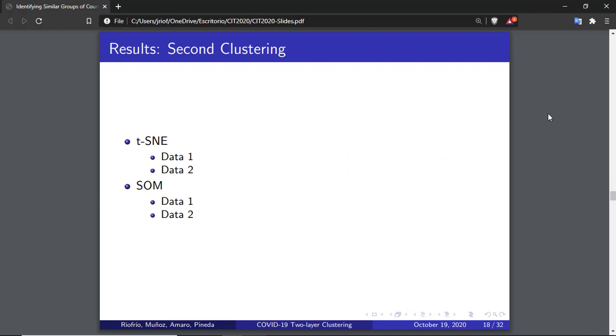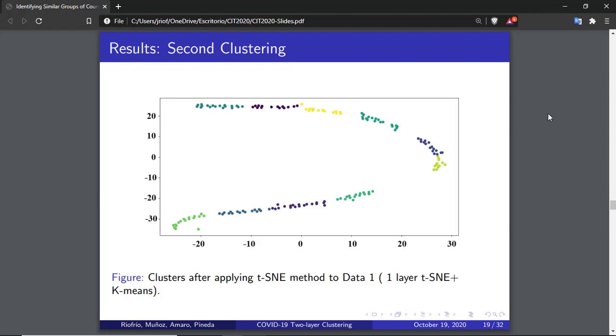In the second clustering, we apply two different methods, the t-distributed stochastic neighbor embedding and self-organizing map. We apply these two methods to two different input data, data1 and data2 to compare the difference of one layer clustering and the proposed two layer clustering. This figure shows the results of applying t-SNE to data1 and then k-means to identify the groups, or what is the same, a one layer clustering. As it can be seen, some groups are easily identifiable, but most of them are close together.